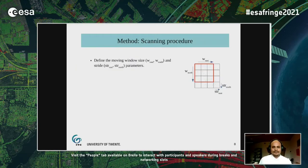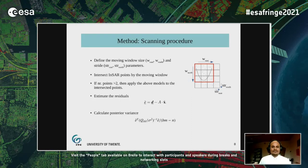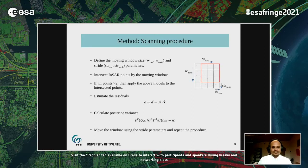The scanning procedure works as follows: we first define the dimensions of the moving window by its size in the east and north direction, and its stride parameter in both directions. We then intersect PS points inside this moving window. If the number of intersected points is greater than two, we solve the model equation using the PS points and deformation time series. After fitting the model, we estimate the residuals and use the posterior variance as a quality metric. The window is then moved using the stride parameter and the procedure is repeated over the entire study area.